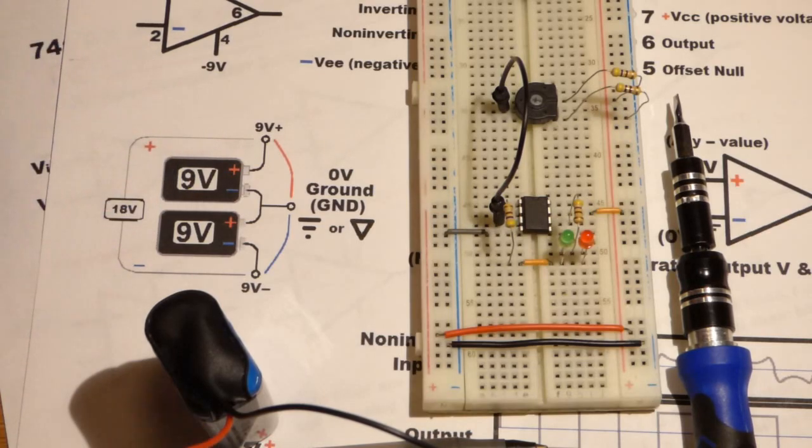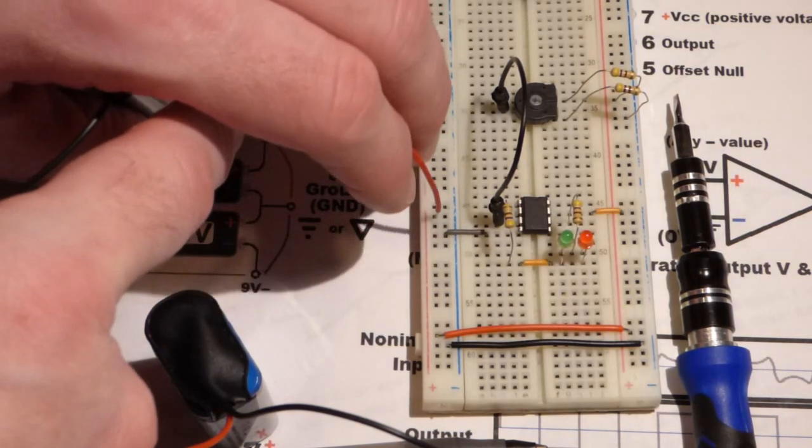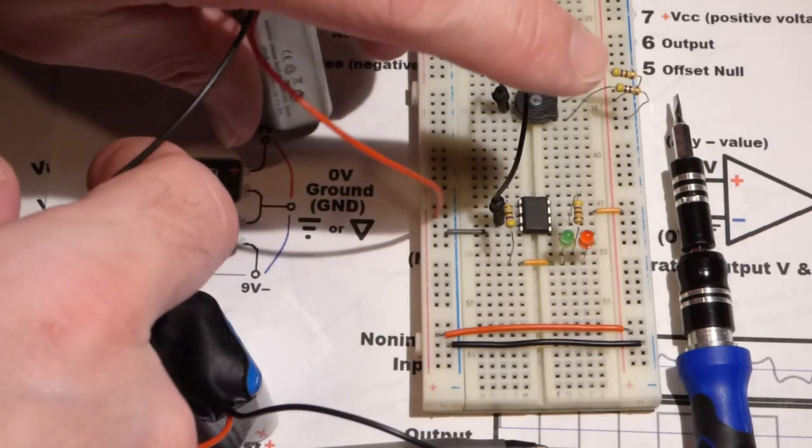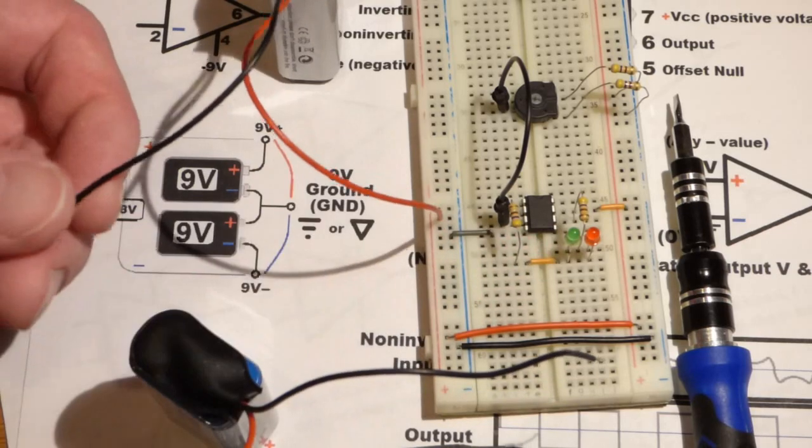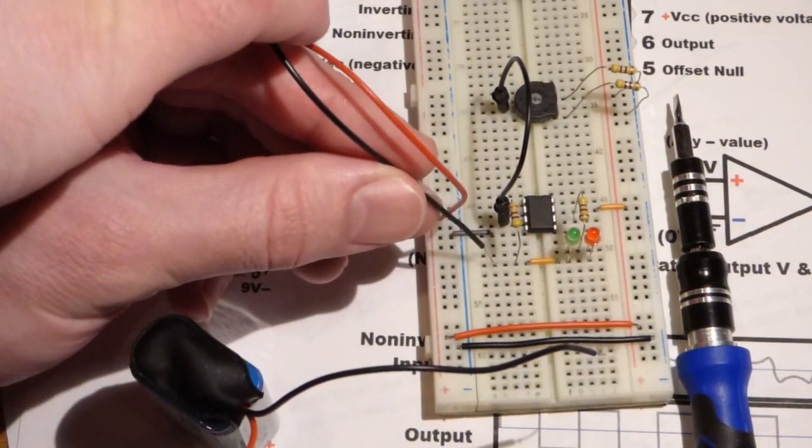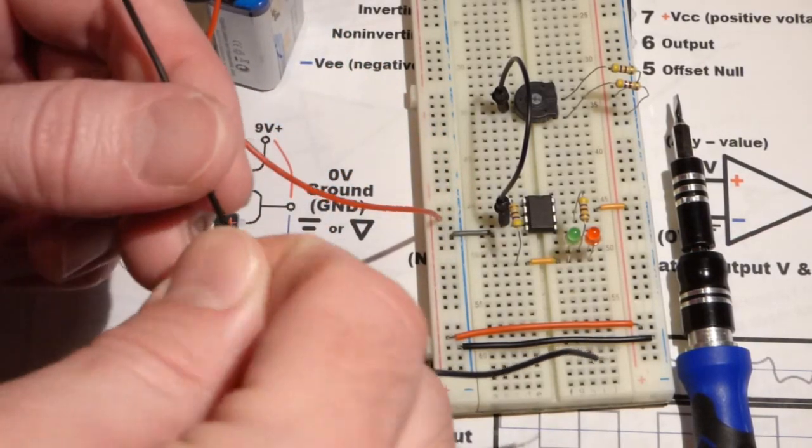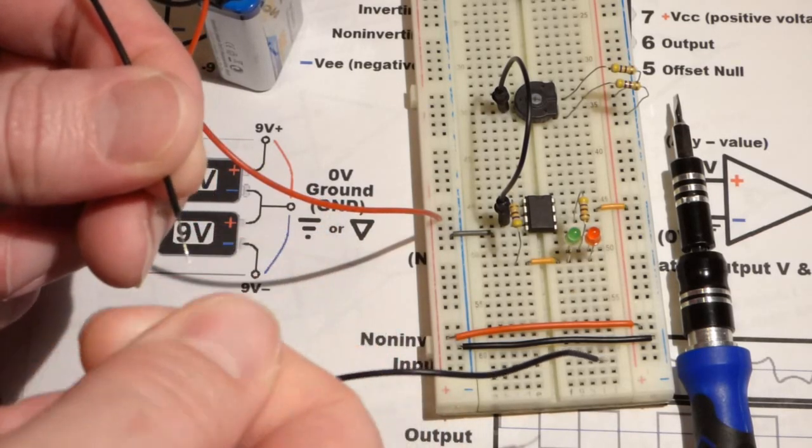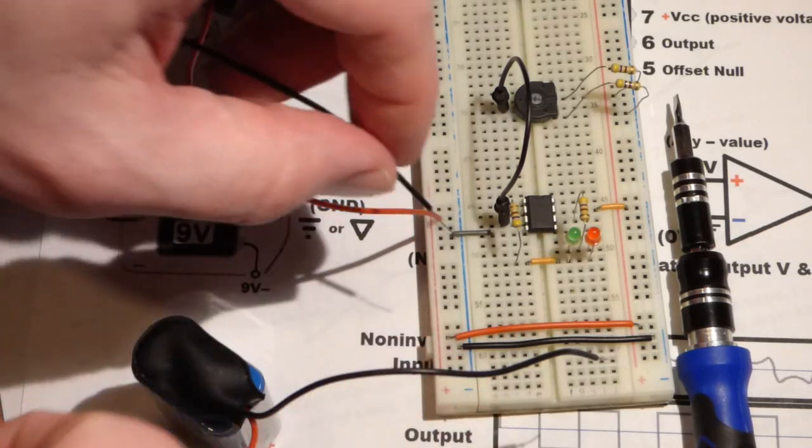We're going to take the red wire here and plug this into the positive rail. Then our ground point, as I said before, it's where this orange jumper is. That's where the two LEDs are and the input to the, these are stranded wires, they're coming a little loose. The ground point is where the LEDs and the inverting pin are connected.